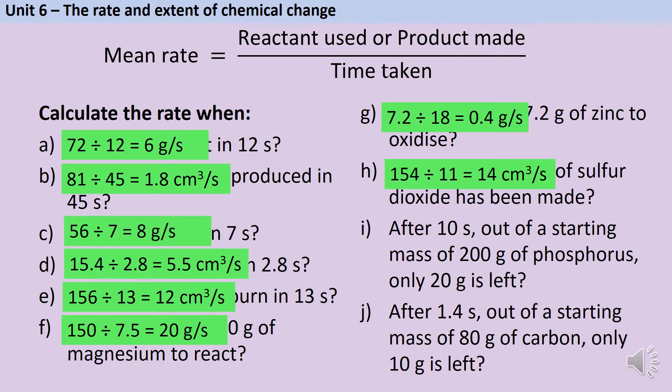If after 10 seconds, out of a starting mass of 200 grams of phosphorus, only 20 grams is left, then in that reaction 180 grams has been used. So 180 grams divided by 10 seconds gives us a rate of 18 grams per second. And finally, if I only have 10 grams of carbon left having started with 80, and that reaction has taken 1.4 seconds, then that's a rate of 50 grams per second.